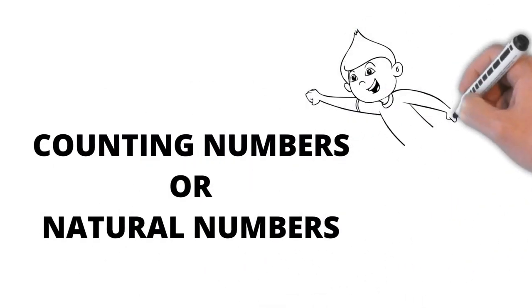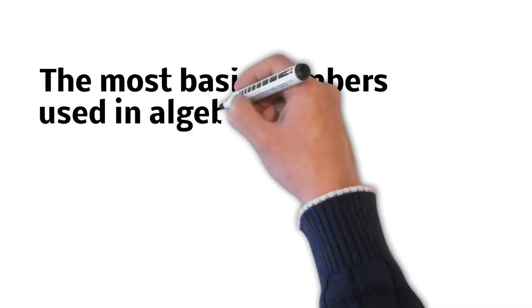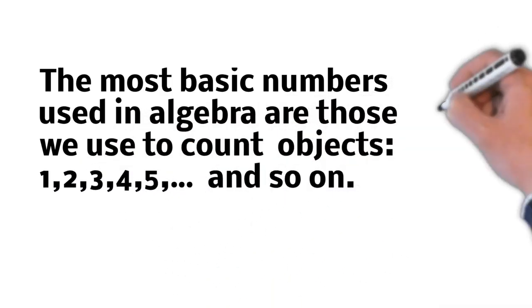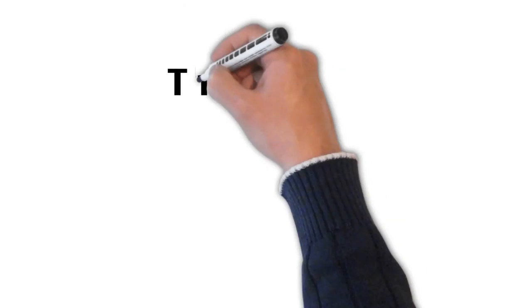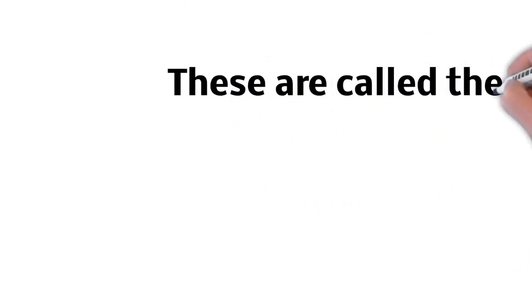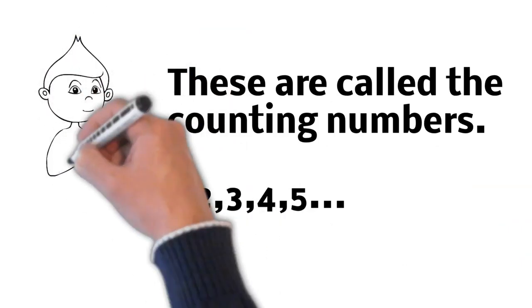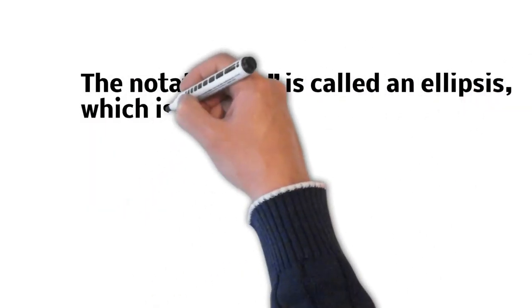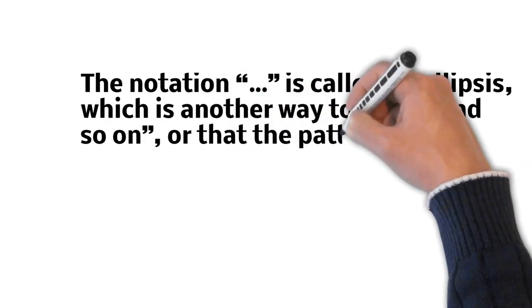Counting Numbers or Natural Numbers. The most basic numbers used in algebra are those we use to count objects, such as 1, 2, 3, 4, 5, and so on. These are called Counting Numbers. The notation dot dot dot is called an ellipsis, which is another way to show and so on.